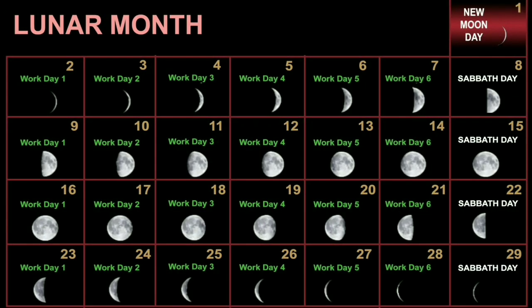Seven days after the second Sabbath, you have the third Sabbath — the moon will look 50% full again. Seven days after that, the moon will look very tiny: that will be the last Sabbath of the month. So if today is the new moon day and it's Monday, the next four Mondays will be the Sabbath.